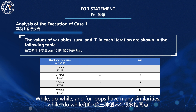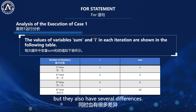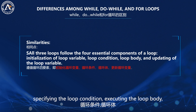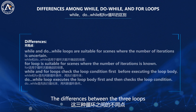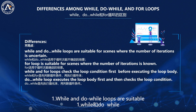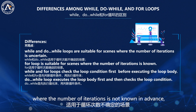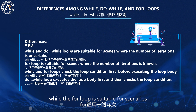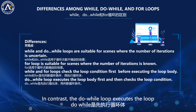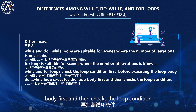While, do-while, and for loops have many similarities, but they also have several differences. All three loops follow the four elements of a loop: initializing the loop variable, specifying the loop condition, executing the loop body, and updating the loop variable. The differences are mainly in two aspects. While and do-while loops are suitable for scenarios where the number of iterations is not known in advance, while the for loop is suitable for scenarios where the number of iterations is known. Also, while and for loops first check the loop condition before executing the loop body, whereas the do-while loop executes the loop body first and then checks the loop condition.